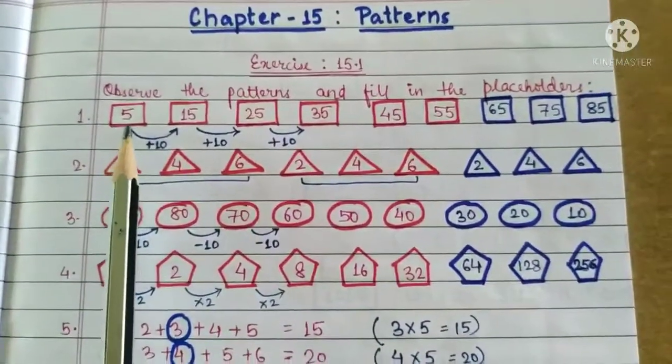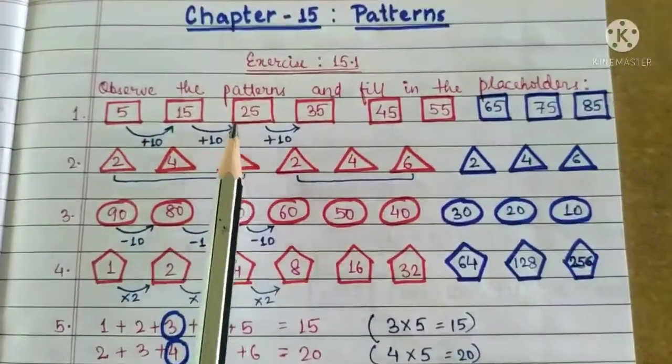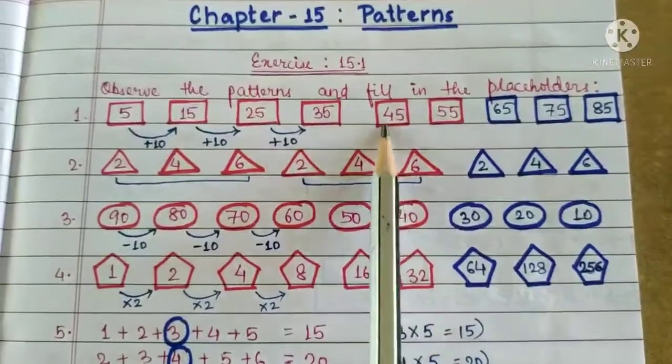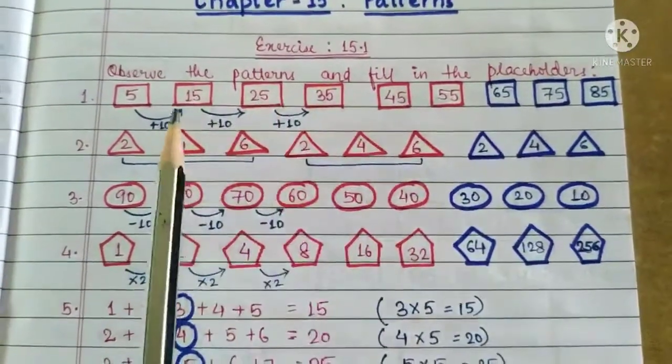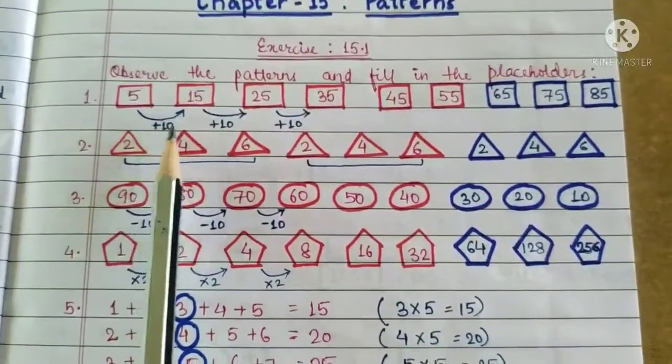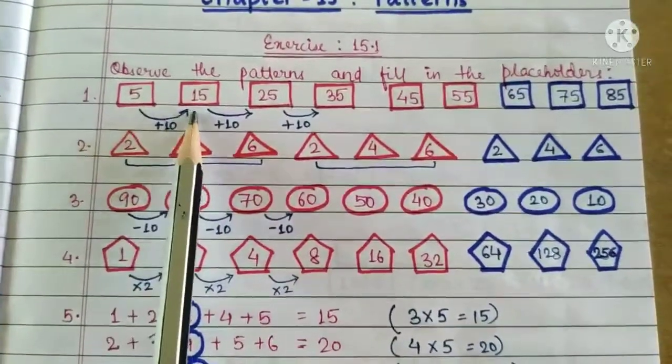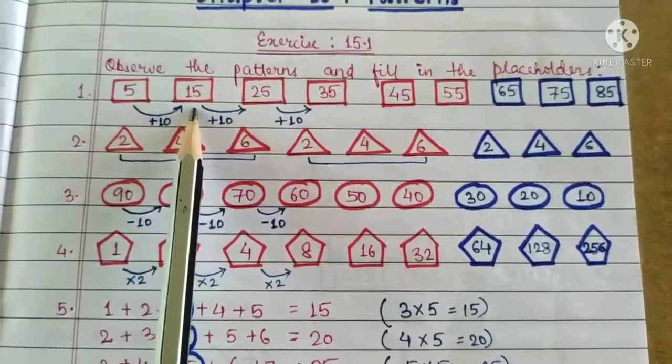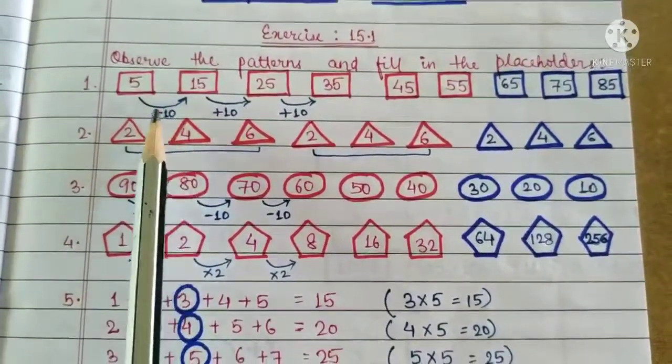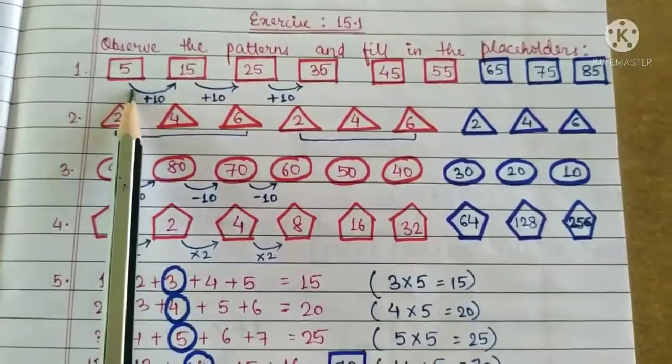The first one is 5, 15, 25, 35, 45, 55. If you carefully see the numbers, you will be able to identify the pattern. The pattern is, the consecutive number is a result of adding 10 to the previous number.